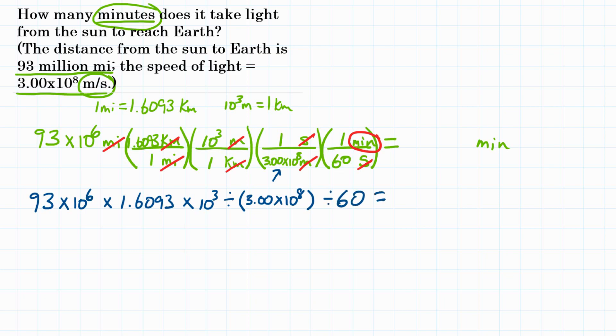Hit equals and you should get something around 8.3147. Let's round that to two significant figures and we will end up with 8.3. So final answer, how many minutes does it take light from the sun to reach Earth? That would be right around 8.3 minutes.